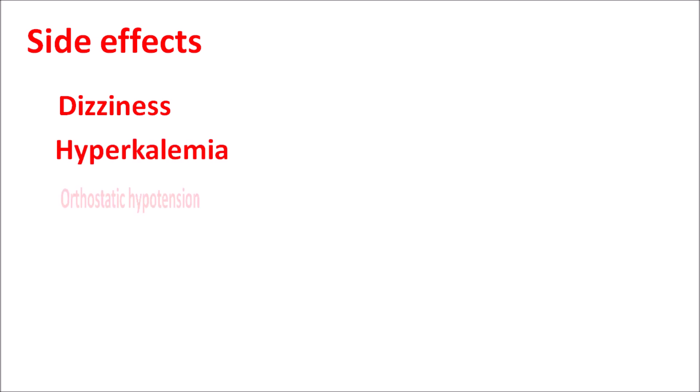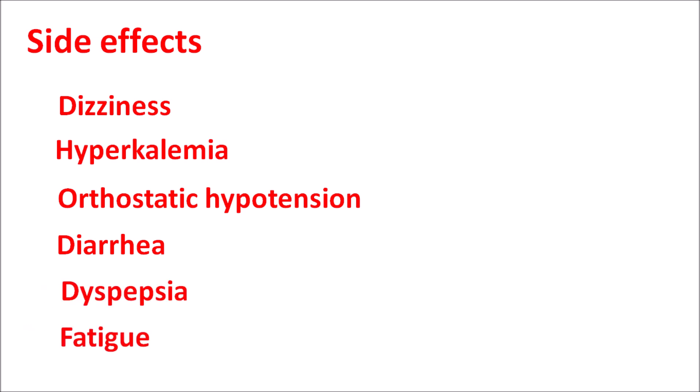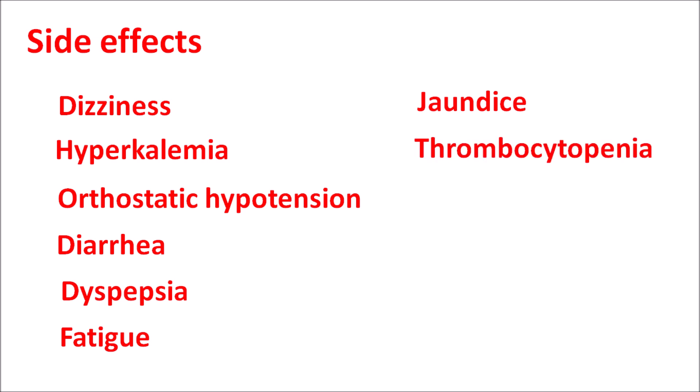The important side effects of Irbesartan are mainly related to its hypotensive actions. It can produce dizziness, hyperkalemia, orthostatic hypotension, orthostatic dizziness, and lightheadedness. It can also produce diarrhea, dyspepsia, and fatigue. In some patients, jaundice and thrombocytopenia (decreased platelet count) may be observed, along with increased creatine phosphokinase levels indicating renal stress and elevation of liver enzymes.